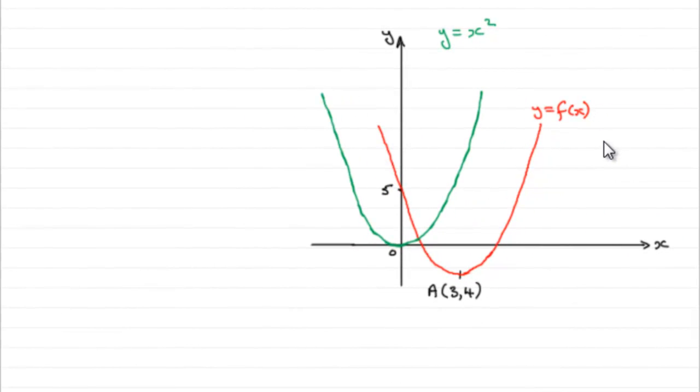Now, in this part then, we're asked to show that the graph of y equals f of x is a translation of the graph y equals x squared, which is this green graph here. And because of that, we're asked to find the equation of f of x.